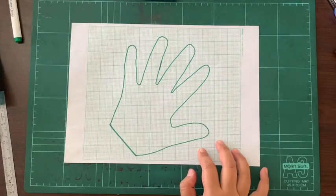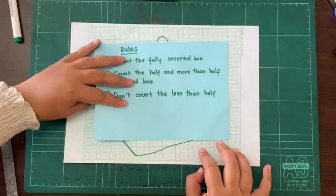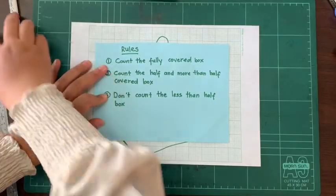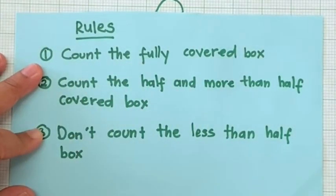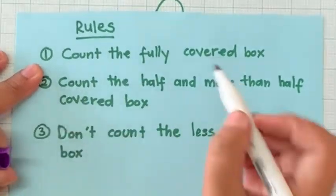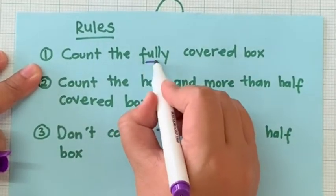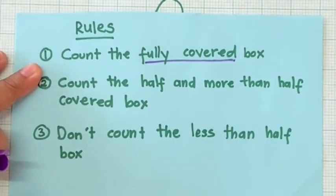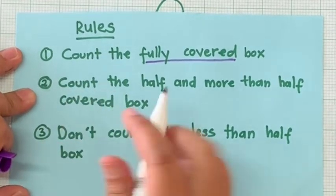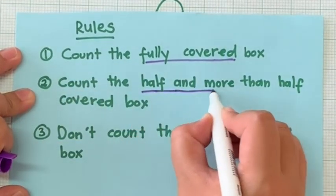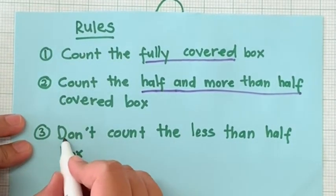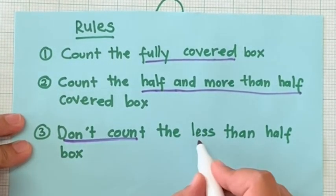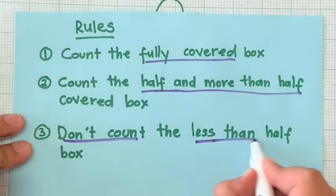So the rules here are: first, count the fully covered box. The second rule, count the half and more than half covered box. And the third rule is don't count less than half box.